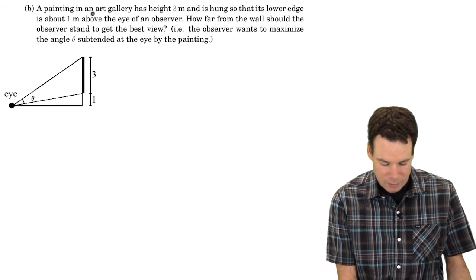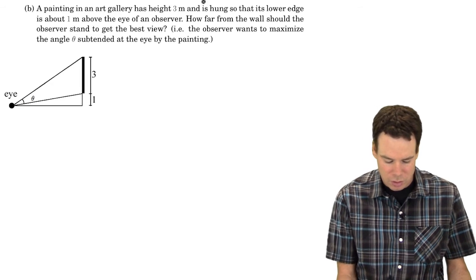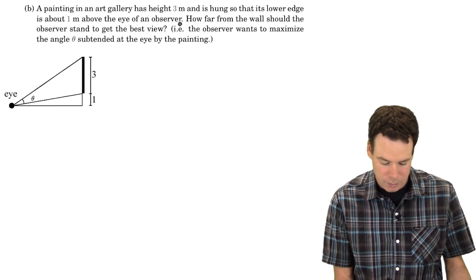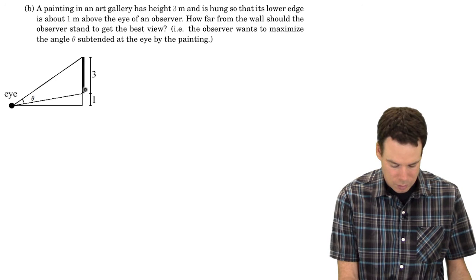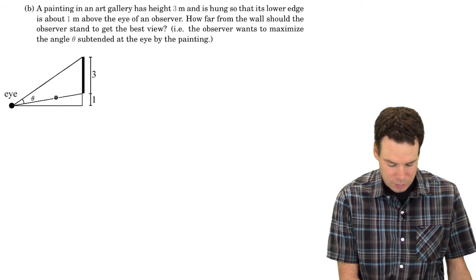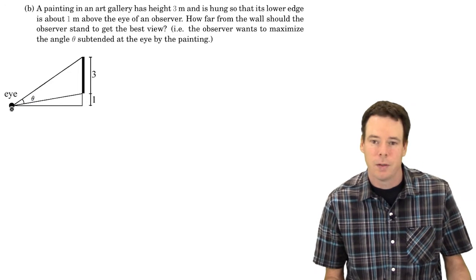In this example we have a painting that's hanging in an art gallery and it has a height of three meters and it's hung so that its lower edge is about one meter above the eye of an observer. So I've got that drawn in the diagram here. Our painting, which is sort of this thickened black line, the eye of the observer, and we see that the bottom of the painting is about one meter above the eye of the observer.